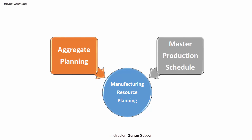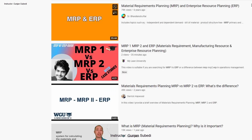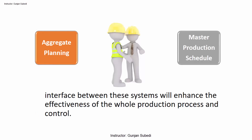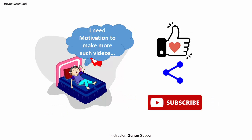Aggregate planning and master production scheduling, or MPS, are two important functions in manufacturing resource planning, or MRP2. The aggregate planning and master production scheduling are very important, as proper knowledge and interface between these systems will enhance the effectiveness of the whole production process and control.